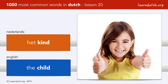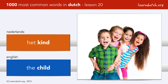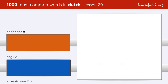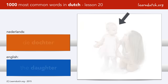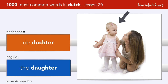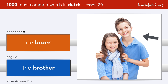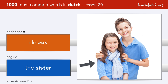The plural noun of kind is irregular: de kinderen. De zoon. De dochter. De broer. De zus. Do you have a brother or a sister?